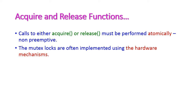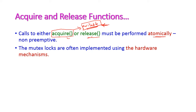The two functions — acquire and release — must be performed atomically, meaning without any interruption. This is because 'available' is a common variable shared between all processes. If one process changes the value of available, the other process should not be allowed to change the same value simultaneously. Hence these two functions must execute atomically as non-preemptive operations. That is why mutex locks are also implemented using hardware mechanisms, as covered in previous lectures.